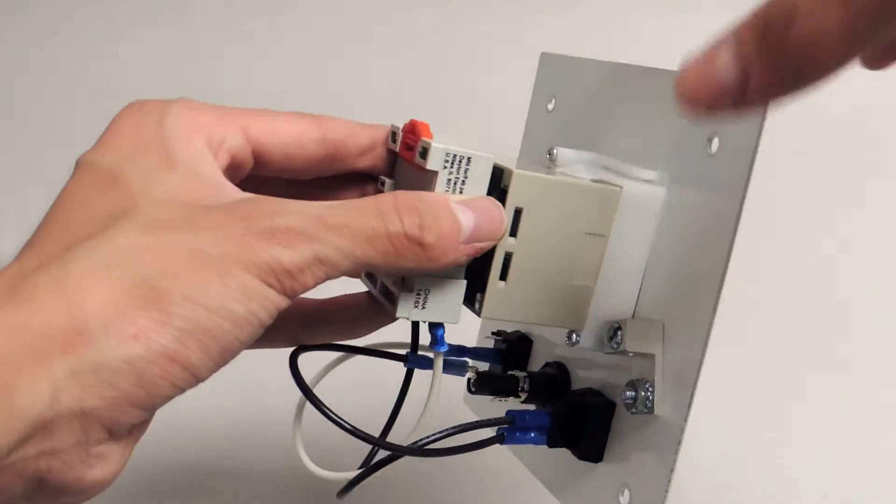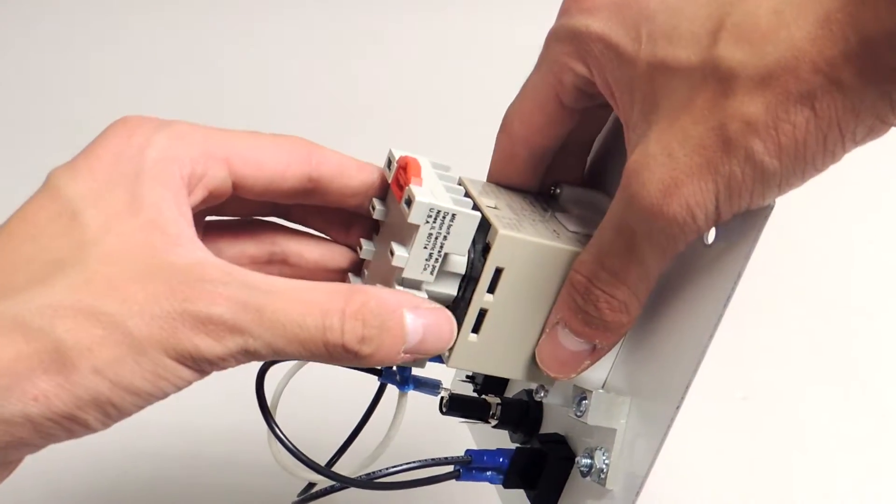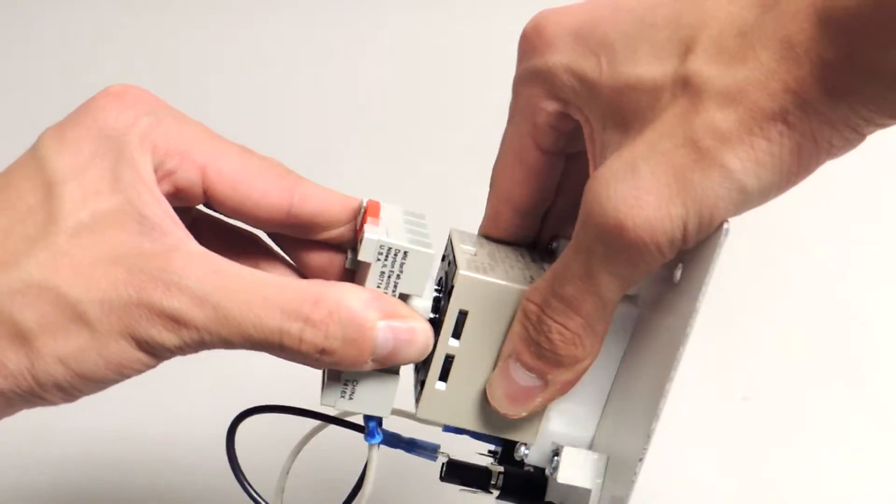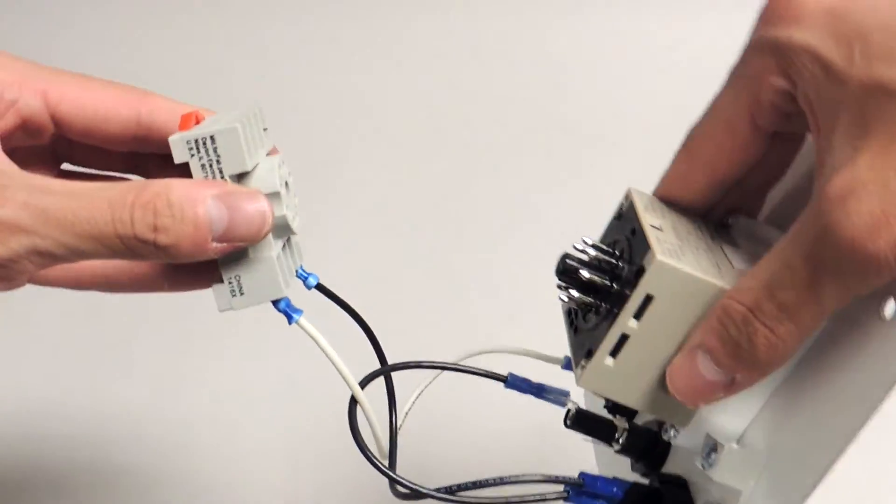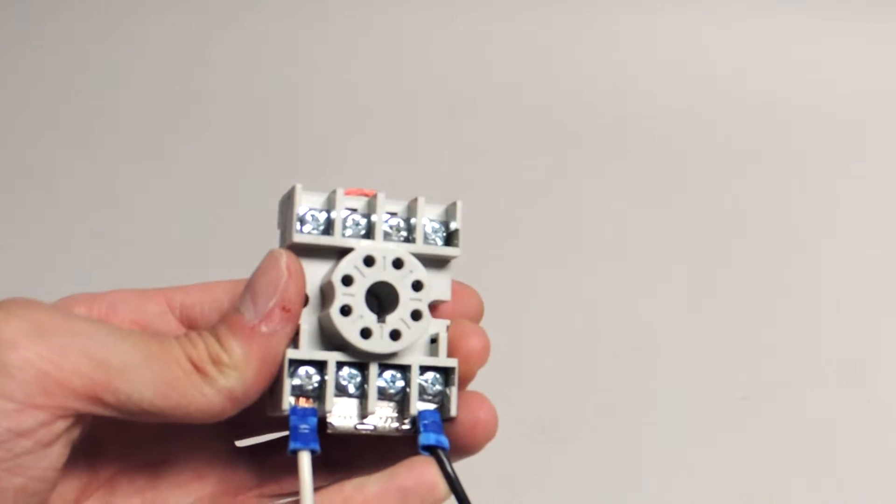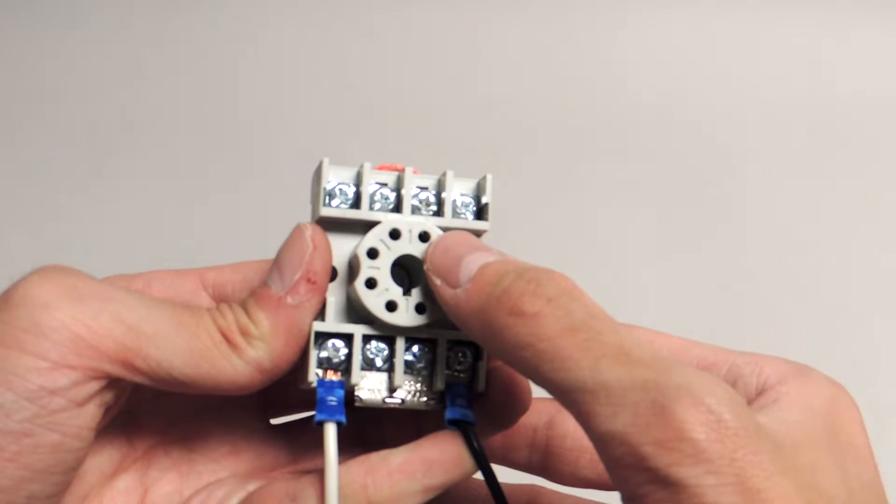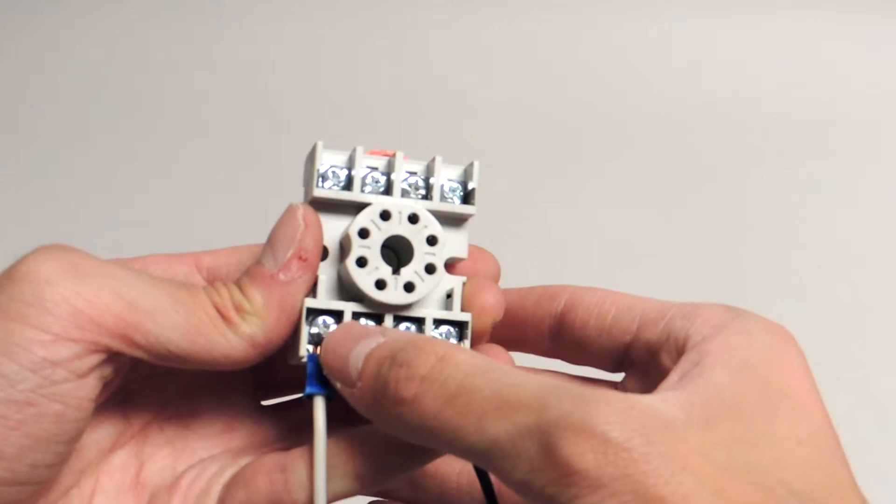Now, it's time to wire the timer. Pull off the relay backing to the OMRON timer. It may take a little wiggling. The timer ports are numbered counterclockwise from the bottom center, starting with one and ending with eight.